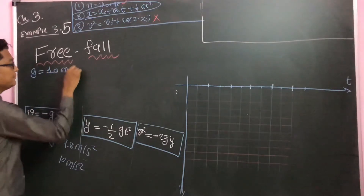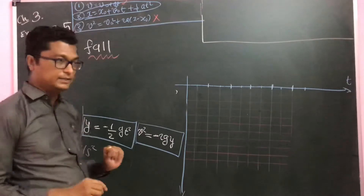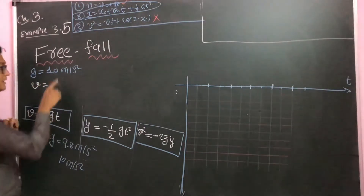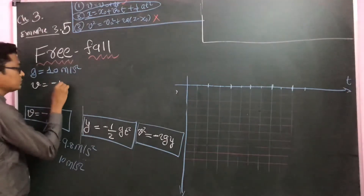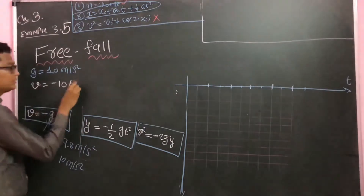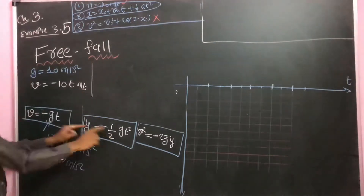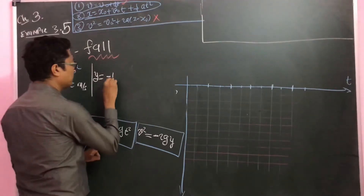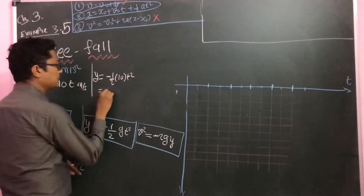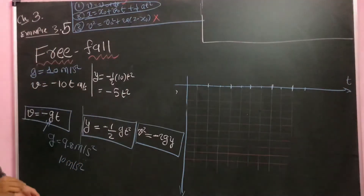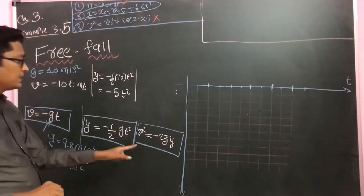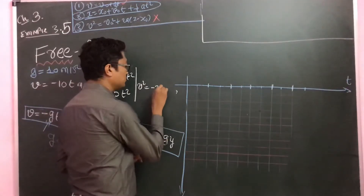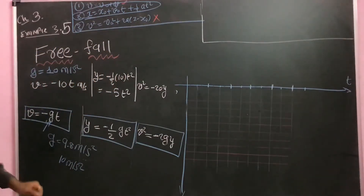Taking g as 10 meters per second squared, the equations become: v equals minus 10t; y equals minus one-half times 10 times t², which is minus 5t²; and v² equals minus 2 times 10 times y, which is minus 20y. These three simplified equations will be used to plot the graphs.